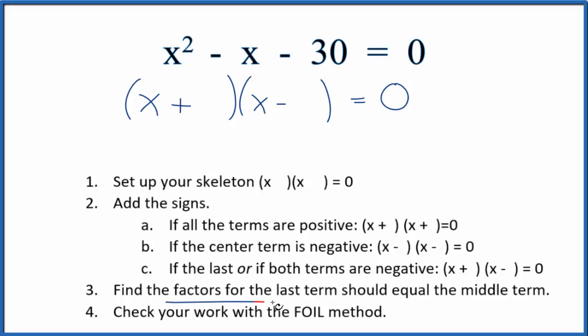Once I do that, I can find the factors for the last term, and they should add up to equal the middle term. So, we're looking for the factors of 30 here. We could have 30 times 1, 15 times 2, or 6 times 5.